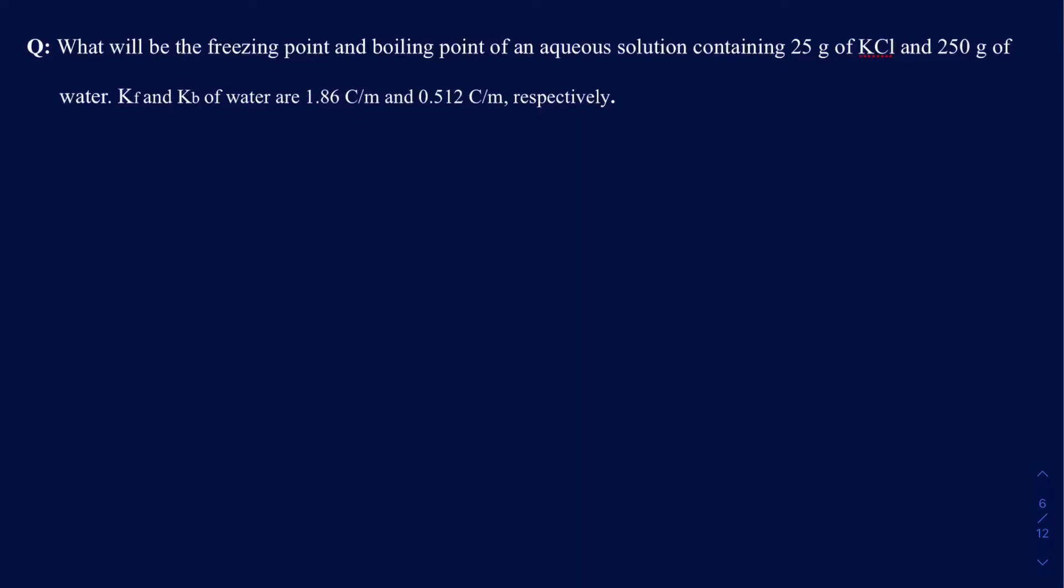Hello everyone, in this video we're going to be solving this problem that's related to the colligative properties. To be specific, it's related to the freezing point depression and the boiling point elevation. So the question says, what will be the freezing point and the boiling point of an aqueous solution that contains 25 grams of KCl and 250 grams of water? And we're given the KF and the KB for the water.